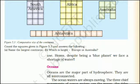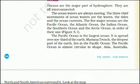Oceans are the major part of the hydrosphere and are all interconnected. The ocean waters are always moving. The three chief movements of ocean waters are the waves, the tides and the ocean currents. The five major oceans, in order of their size, are the Pacific Ocean, the Atlantic Ocean, the Indian Ocean, the Southern Ocean and the Arctic Ocean.